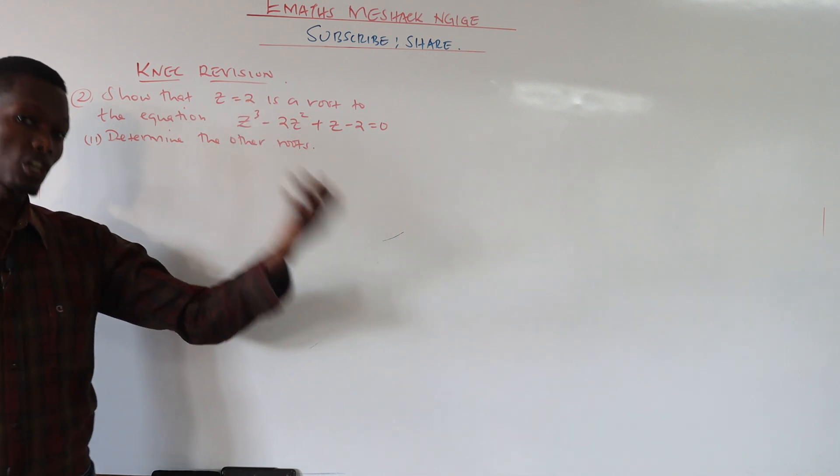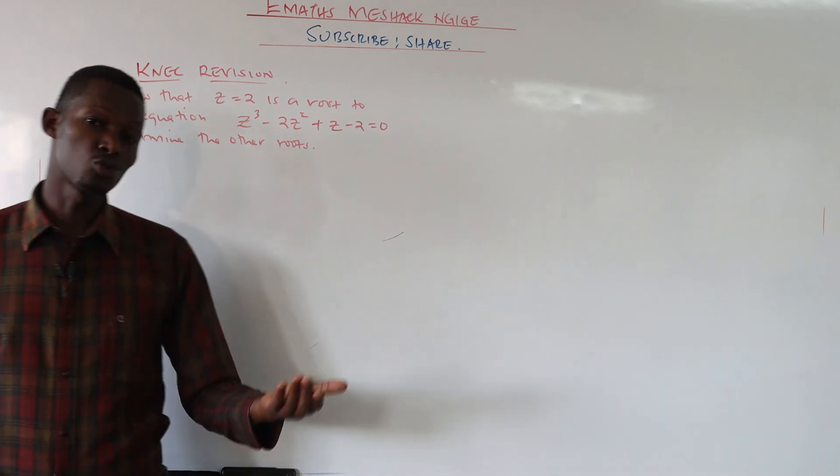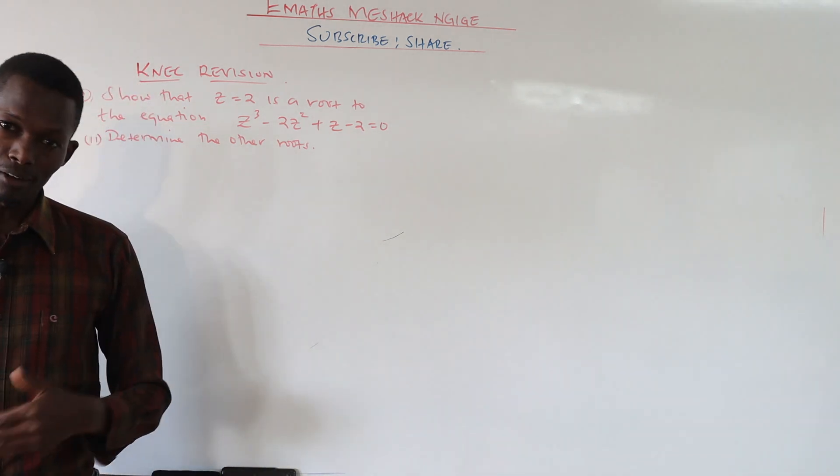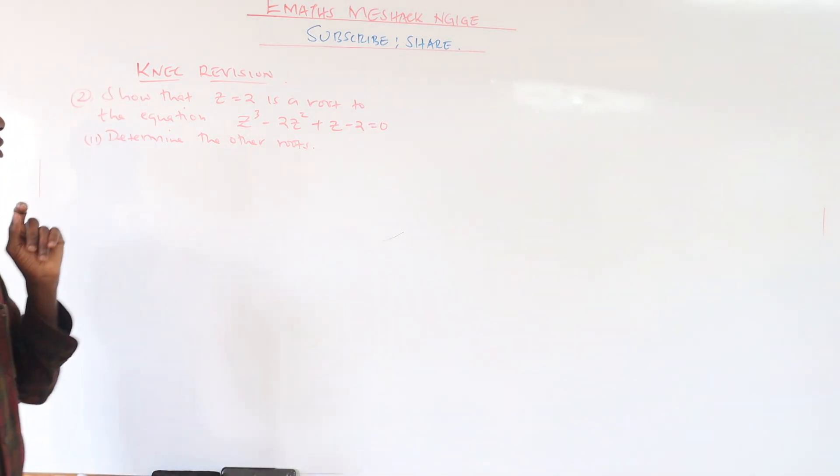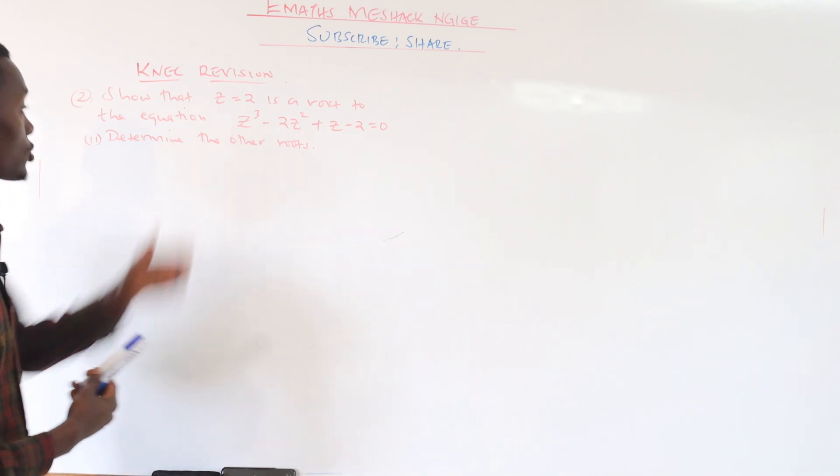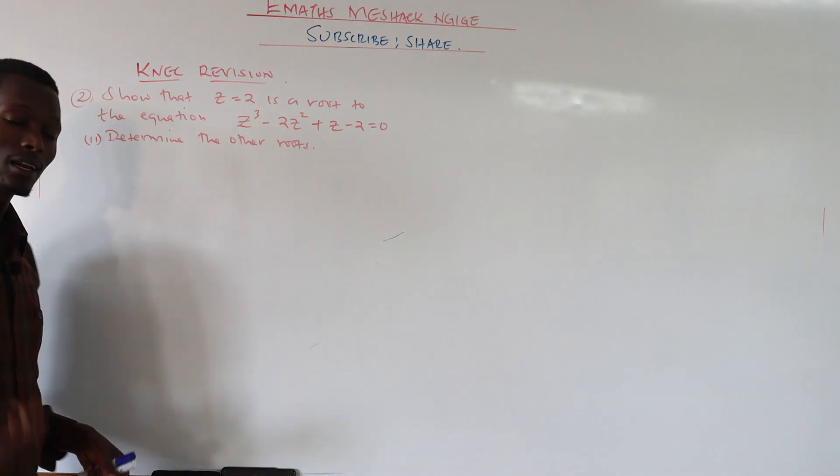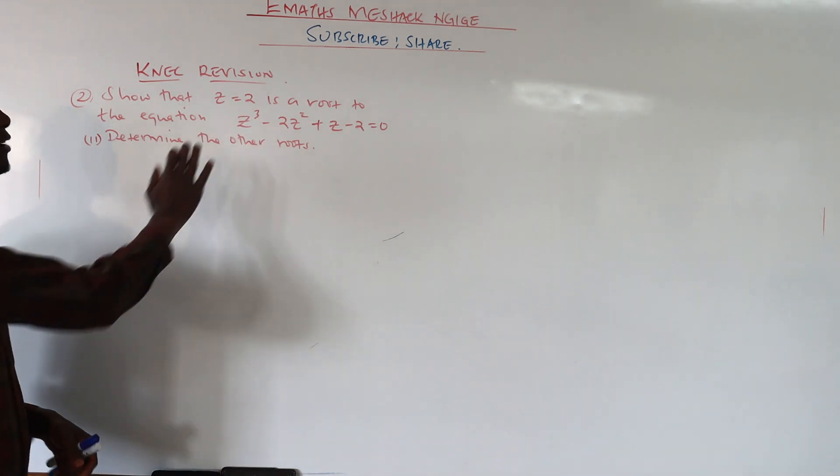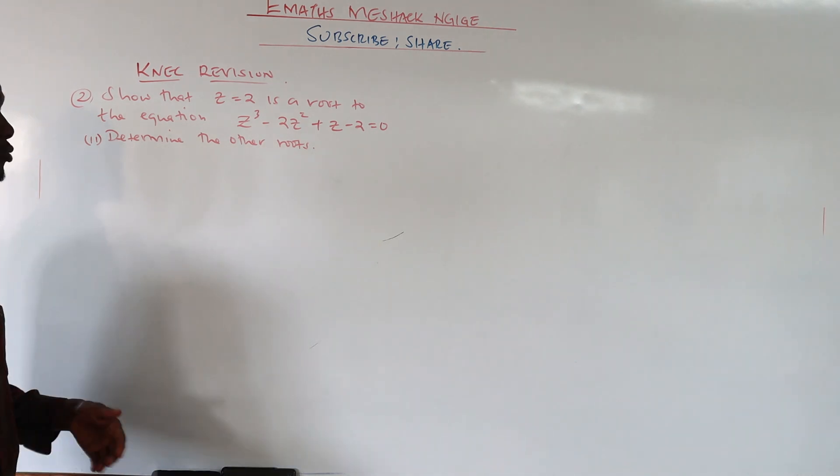It doesn't have the j part. So we cannot say that since we have z equals 2 as a root, we also have z equals negative 2. Because remember we don't change the value or the sign at the real part position. If z is given by the real number 2, then we only have one root per se.